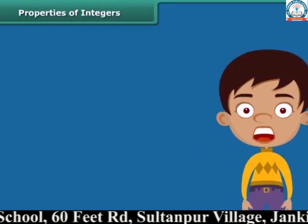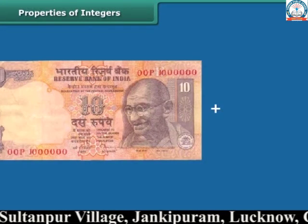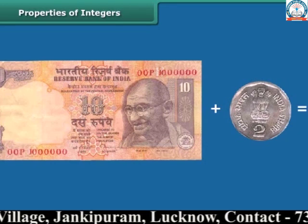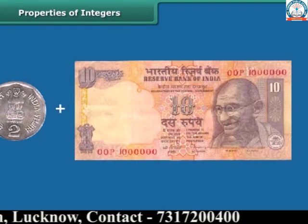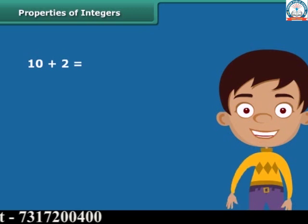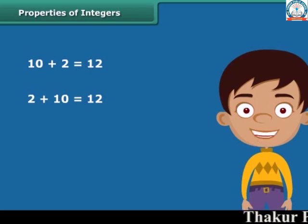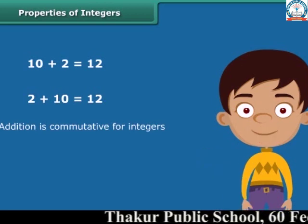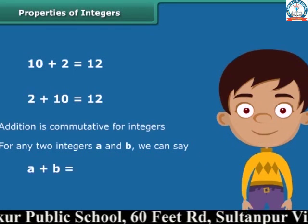Let us now move towards another property — the commutative property. This is a 10-rupee note. If we add one coin of 2 rupees, we get 12 rupees. Now take a coin of 2 rupees and add one note of 10 rupees — again we get 12 rupees. So 10 plus 2 equals 12 and 2 plus 10 equals 12. In both cases we get the same answer. Hence, addition is commutative for integers. In general, for any two integers A and B, A plus B is equal to B plus A.